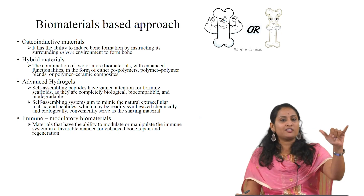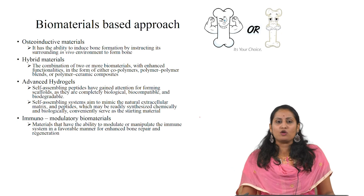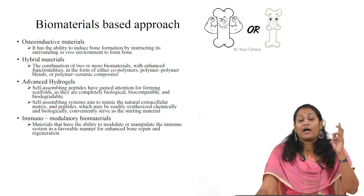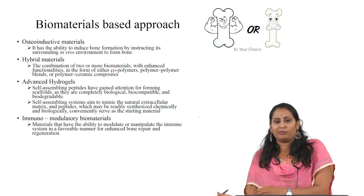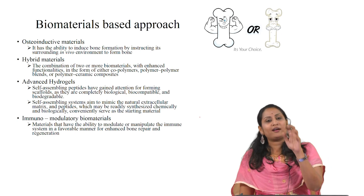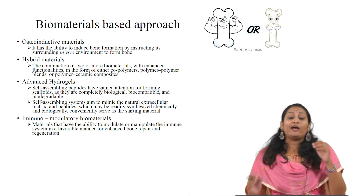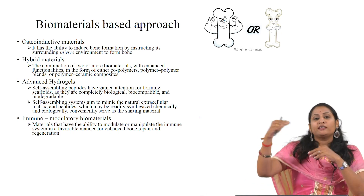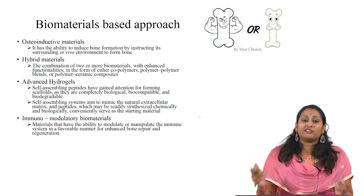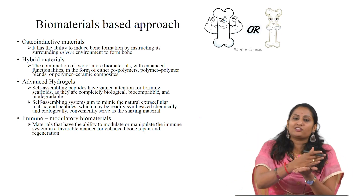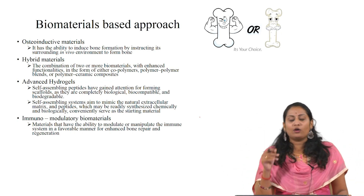First generation materials are called bioinert materials. For example, stainless steel and its alloys are bioinert materials. Then researchers shifted from passive materials to active materials. Second generation materials are called bioactive materials, where there is interaction with the host organism biology at the cellular level.